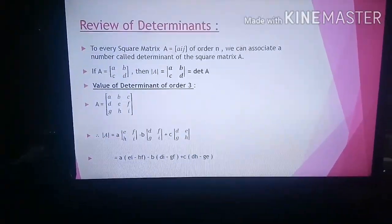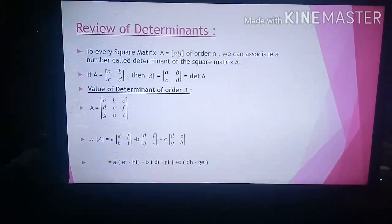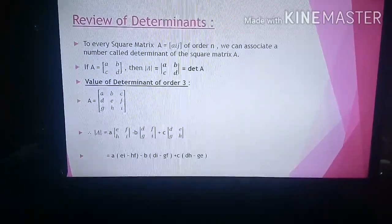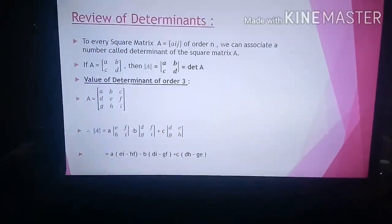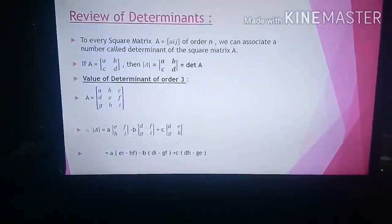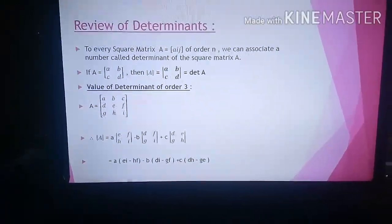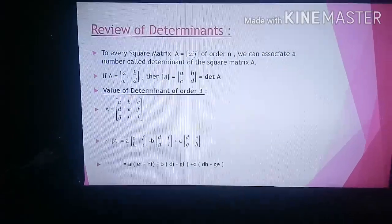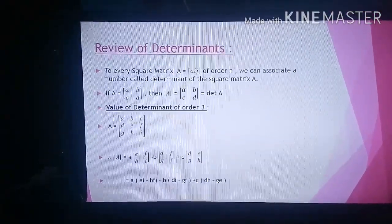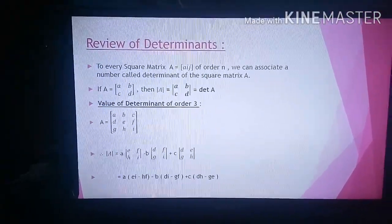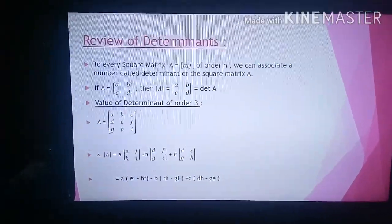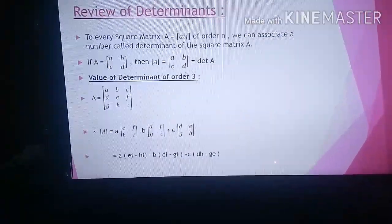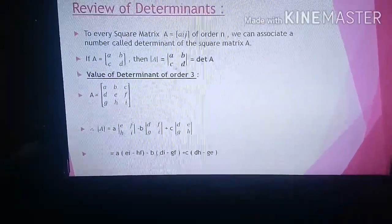Next we have to find out the value of the determinant. We can get the value of a determinant of order 1 — that is just that single element. Then the value of the determinant of order 2 we can find out by cross multiplication. Suppose the matrix is ABCD — cross multiplication means the result will be A into D minus C into B.